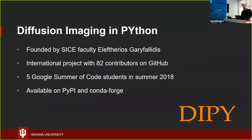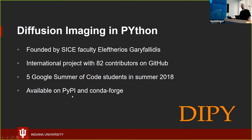DiPy was founded by Professor Gary Felitas as a grad student and has grown into a broad international project with 82 contributors on GitHub. That includes five students funded by Google through the Python Software Foundation the previous summer, two of whom were visualization students. It's widely available — the code is on GitHub, and users can access releases through PyPI and conda-forge.